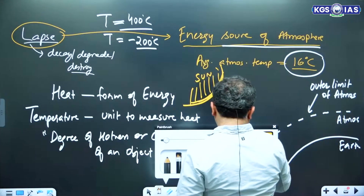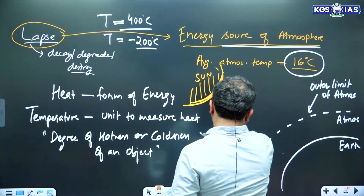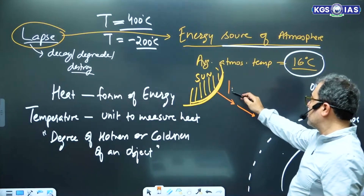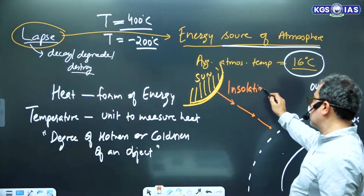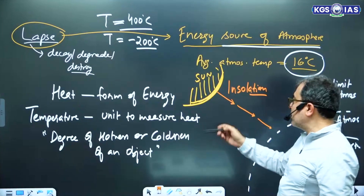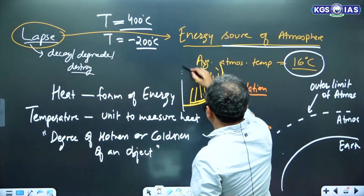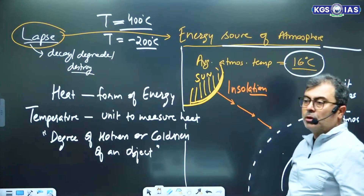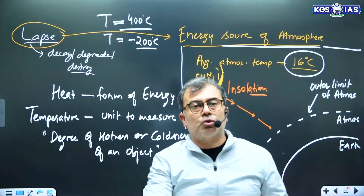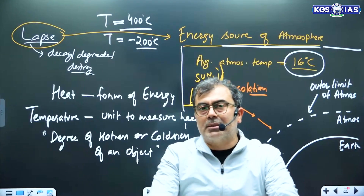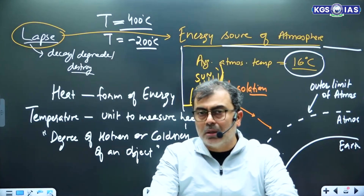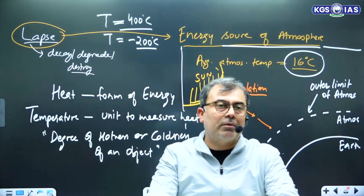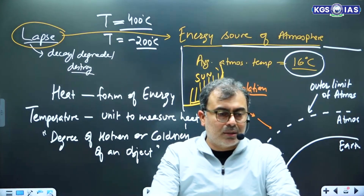Sun is the ultimate source of energy. The energy coming from the sun is called insolation. Do not worry about definitions right now — we will use these terms so many times in this diagram that you will not need to bother about it. Sun is the ultimate source of energy to the Earth as well as to the atmosphere. When you stand in sunlight, you feel warm — dhoop mein garmi lagti hai. Sometimes we go under the shade of a tree.